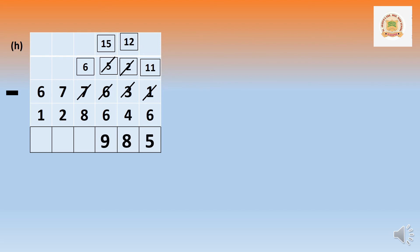In the thousands: 6 cannot minus 8. Borrow from 70,000 — it becomes 60,000. The thousands become 16,000. Sixteen minus 8 equals 8. Now 60,000 minus 20,000 — bigger number: 6 minus 2 equals 4, that is 40,000. In the lakhs place: 6 minus 1 equals 5. Answer is 5,48,985.